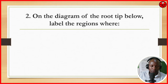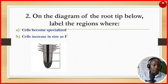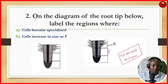Question number 2: on the diagram of the root tip below, label the regions where cells become specialized — named E — and where cells increase in size — named F. We are looking at where the cells become specialized as letter E, and where cells increase in size as F. There is also cell division shown on the diagram. Remember, if you give your answer outside the diagram it shall be rejected.